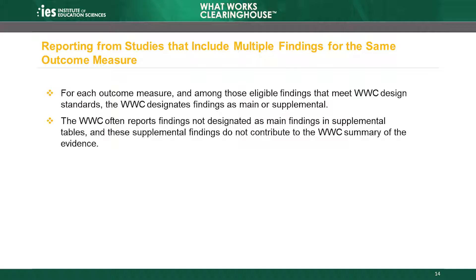Among those eligible findings that meet WWC design standards, the WWC designates one or more findings reported in the study as the main findings that contribute to the WWC summary of the evidence. Findings that do not contribute to this main summary are considered supplemental, and may be reported separately, such as in an appendix.